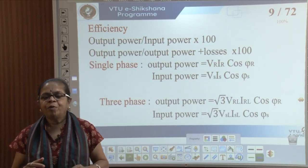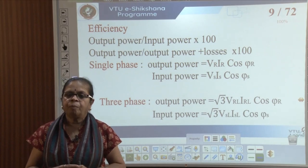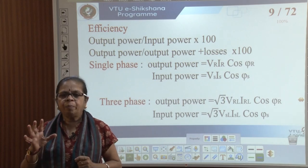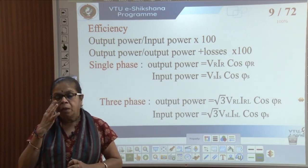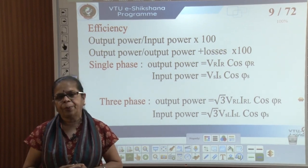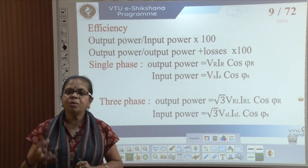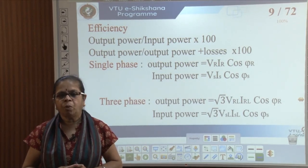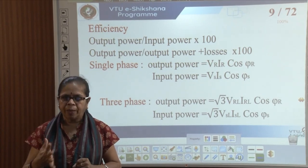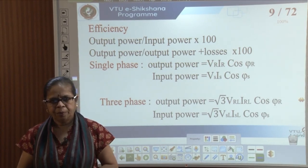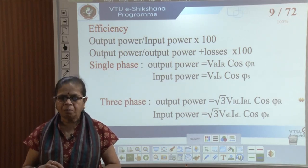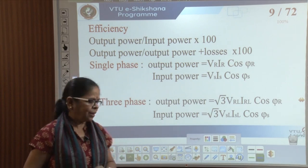We have now derived the model for the short line, found the ABCD constants, obtained expressions for sending end voltage and regulation, established that regulation can be zero at a certain leading power factor, and know how to calculate efficiency. We are all set to solve some problems.